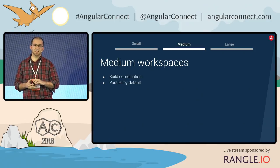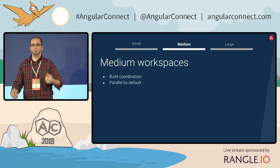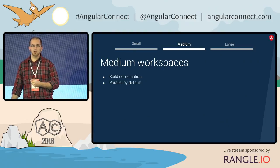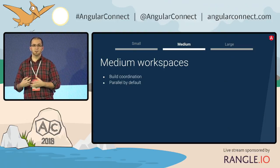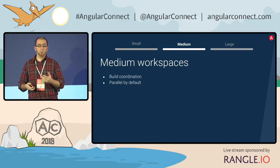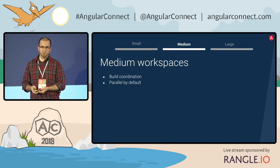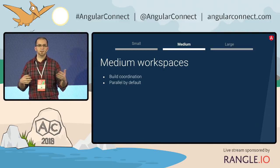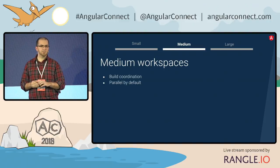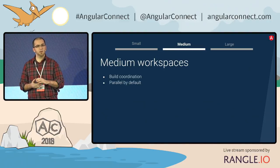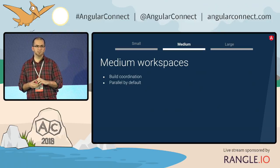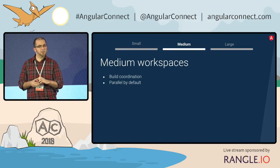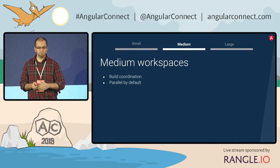Since Bazel is actually building a graph of what it needs to coordinate and build, it will be parallel by default. It knows what's on the critical path, what's not, and everything that can run in parallel. Node is single-threaded by default, but you can run things in parallel and spawn other processes. But in Bazel, that's just the norm.